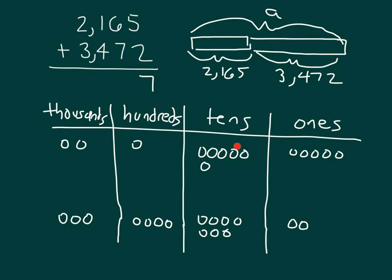Next, we have 6 tens with 7 tens. That equals 13 tens, in which case we can go ahead and bundle or regroup. How many do we bundle? Right.